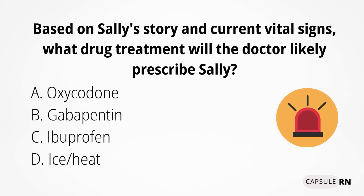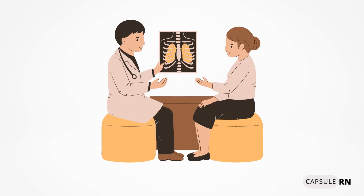Remember the situation with Sally? Based on Sally's story and current vital signs, what drug treatment will the doctor likely prescribe? The answer is C, ibuprofen. Since Sally's pain is mild — a 3 out of 10 — her vital signs are not abnormal, and her facial expression is positive, the doctor will likely prescribe ibuprofen for a few days to help with the inflammation and pain Sally is experiencing after the seatbelt hit her ribs during that fender bender.